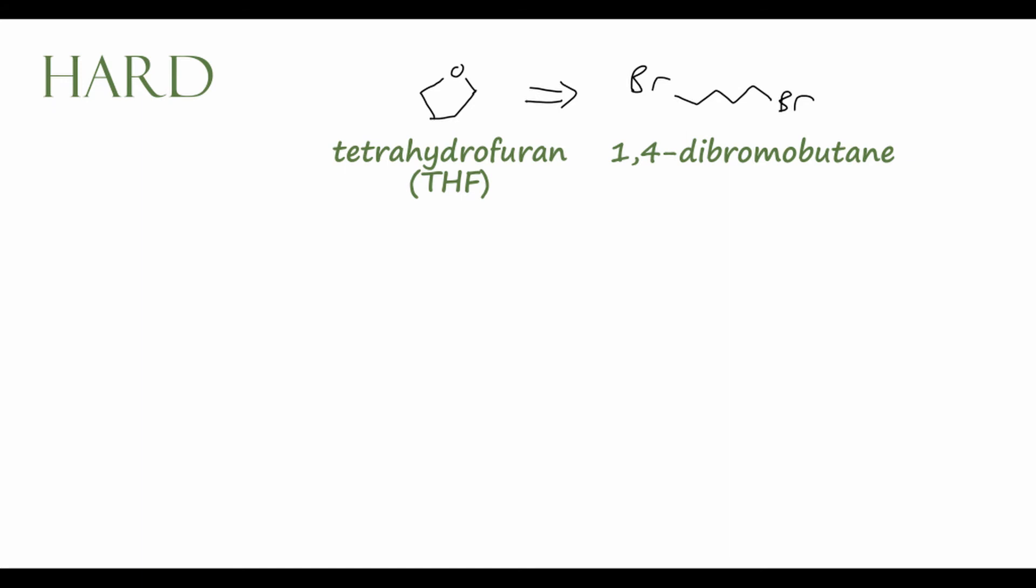The first thing that's very useful to look at in retrosynthetic analysis is how many carbons you have. We can count the carbons in each of our starting material and product, and notice that they both have four carbons. So we don't need to add or subtract any carbons, we're just messing with the functional groups. Another thing that is common in retrosynthetic analysis is a ring-closing reaction. We're starting with an acyclic compound, our dibromobutane, and our final product will be cyclic, so we're going to be closing a ring at some point in the reaction sequence. For me, I think the most straightforward way to approach this problem is by working backwards.